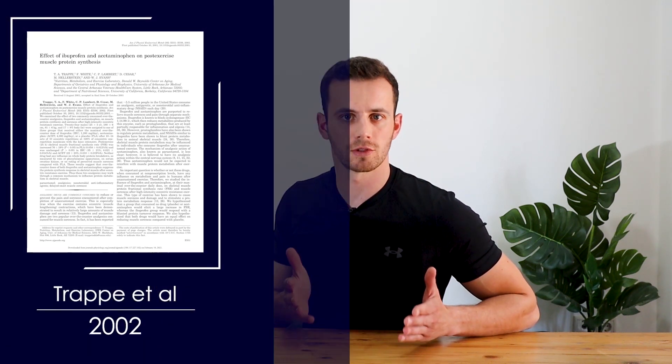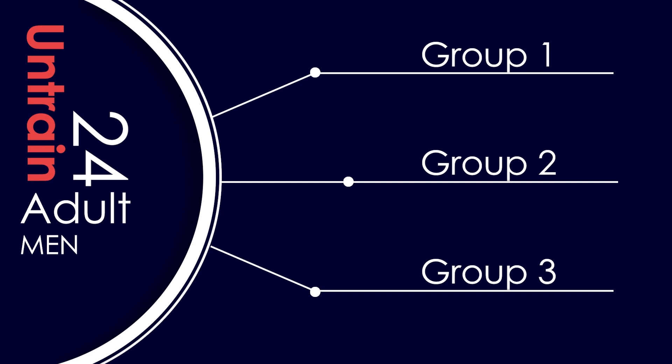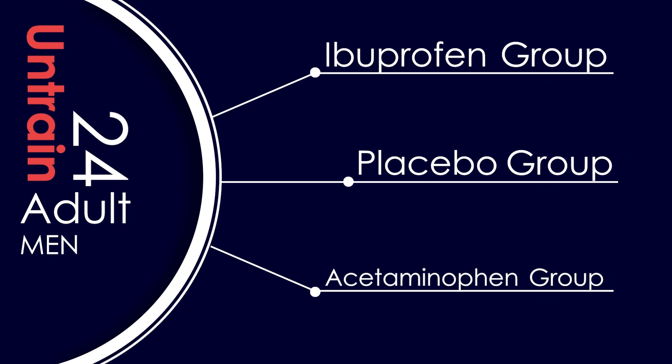The study I've been talking about came from Trapp and colleagues in 2002. What they did was take 24 untrained males and randomly divide them into three different groups: the ibuprofen group, the acetaminophen group, and the placebo group.